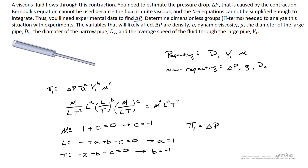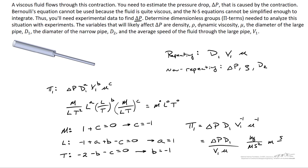We also find that A equals one. So pi one equals delta P times D1 to the A power — that's D1 — times V1 to the B power, which is negative one, times mu to the C power, also negative one. So pi one equals delta P times D1 divided by V1 times mu. Checking units: kilograms per meter second squared times meters times seconds per meter times meter seconds per kilogram — the seconds squared, kilograms, and meters all cancel out, confirming it's dimensionless.